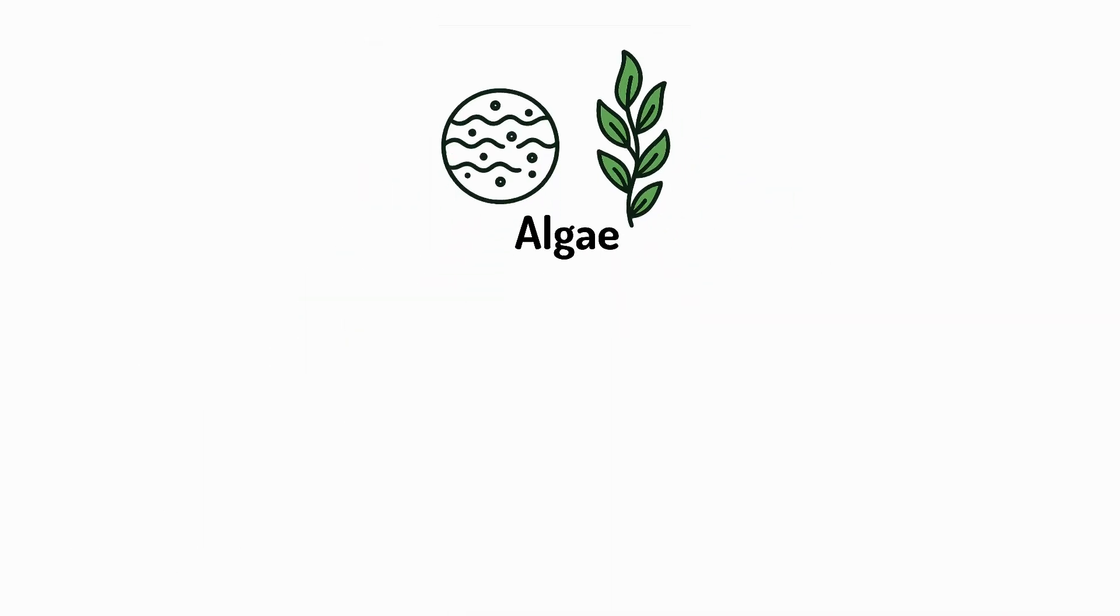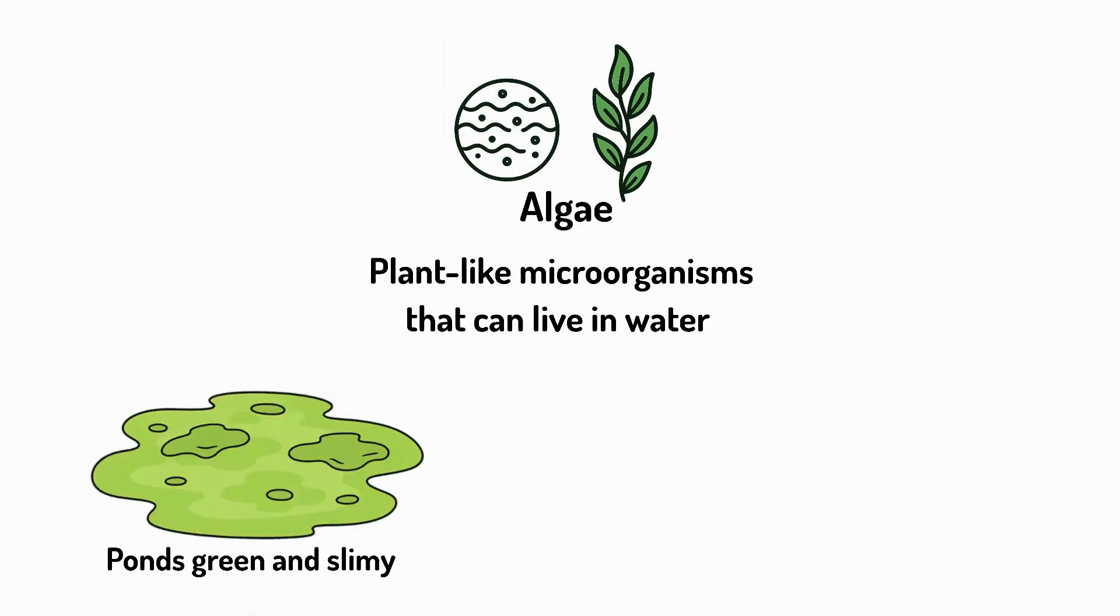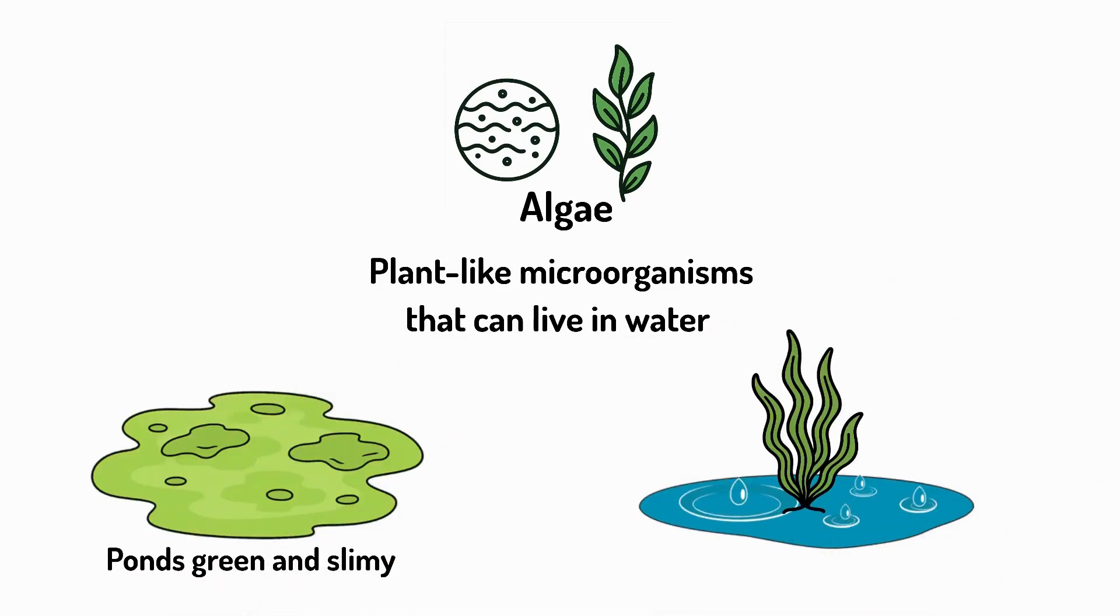Algae are plant-like microorganisms that can live in water. Some make ponds green and slimy. Others, like kelp, are giant algae that grow in the sea.